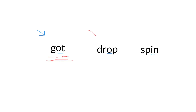Now let's read the second word: D-R-O-P. Do you see any two consonants next to each other? D and R in the word 'drop.' The D and R are two consonants next to each other, so we're going to blend the sound: D-R-O-P. Drop.